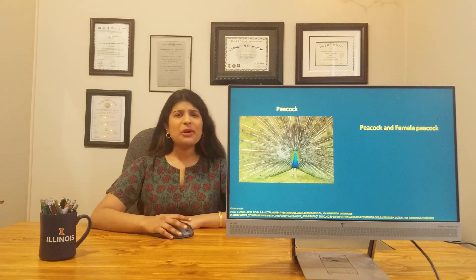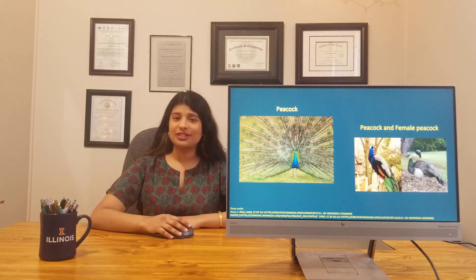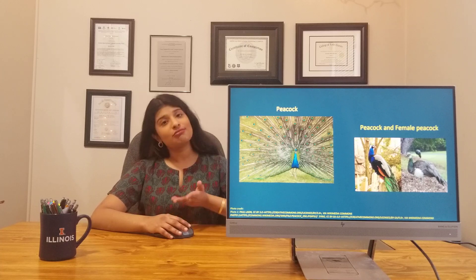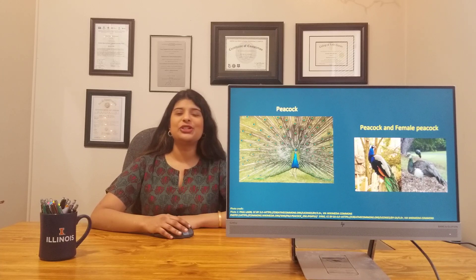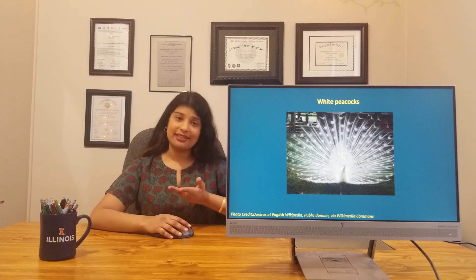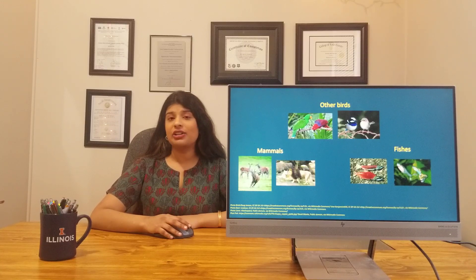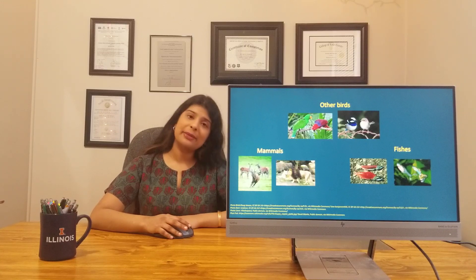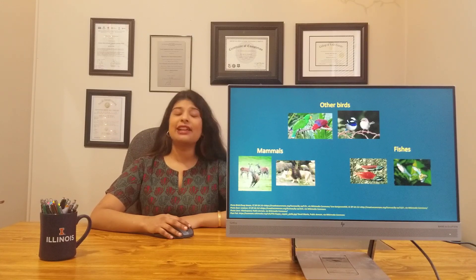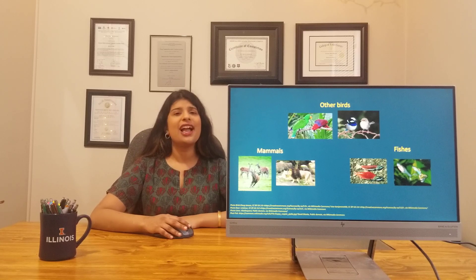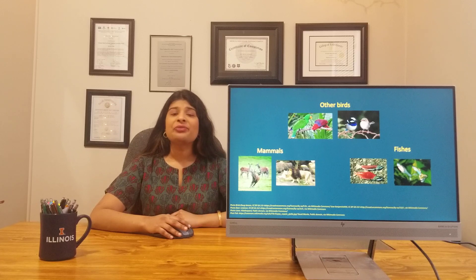Have you ever wondered why the peacock got its beautiful colors? The peahen, or female peacock, has its own beautiful colors too. White peacocks are white and that's their color, and other birds have their own colors and characteristics. Mammals have their own traits and fishes have their own characteristics — this way all living things in this world have their own traits and characteristics. How did they come about? One interesting question here.